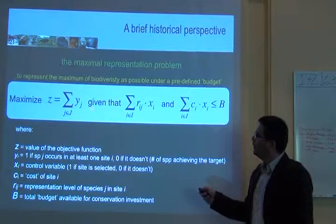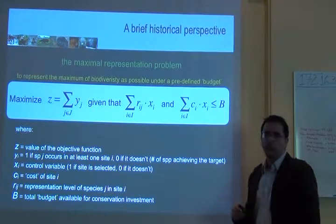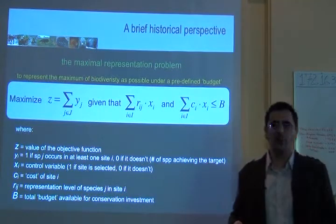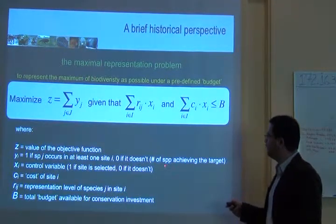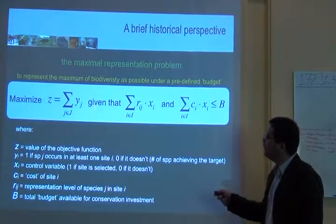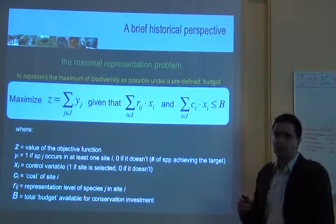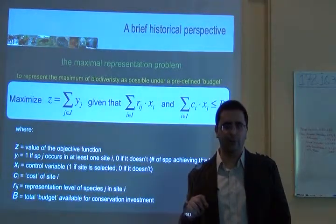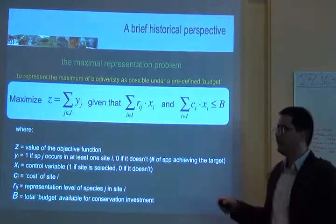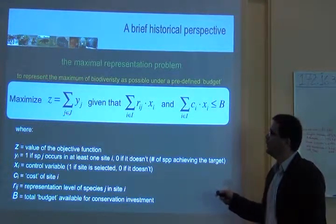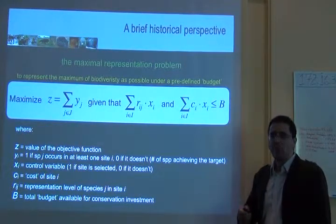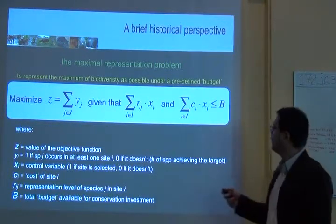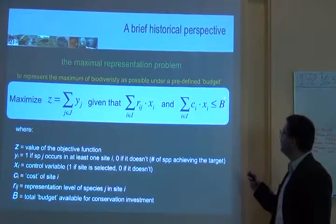The variable YJ is one if the species occurs in at least one cell, and zero if the species is not represented. You are summing the number of species for which the target has been achieved. That is the response you get from this objective function — the number of species achieving the target you get for your budget.